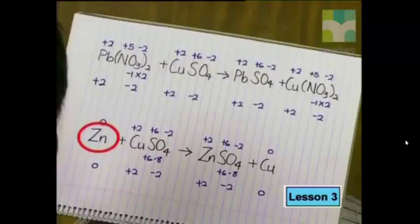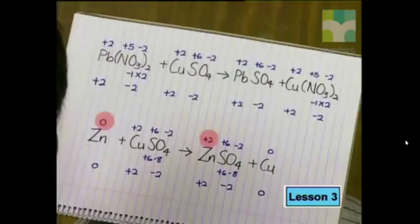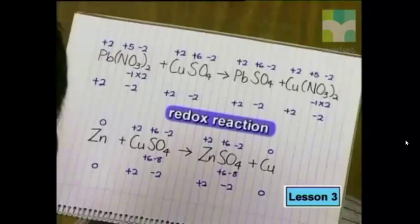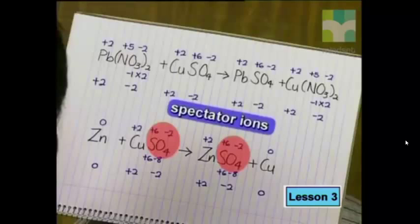In the second beaker, the reactants were zinc and copper sulfate, and the products consist of zinc 2 sulfate and copper. Notice that the oxidation number of zinc has changed from 0 to +2, while copper has changed from +2 to 0. The change in oxidation number indicates that there has been a change in the way electrons are arranged around the copper and zinc atoms. Therefore, this reaction can be classified as a redox reaction. Notice the oxidation numbers of the atoms in the sulfate ion did not change — these ions took no part in the redox reaction and are called spectator ions.